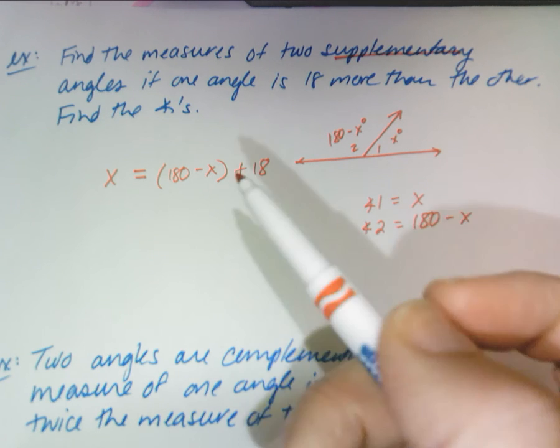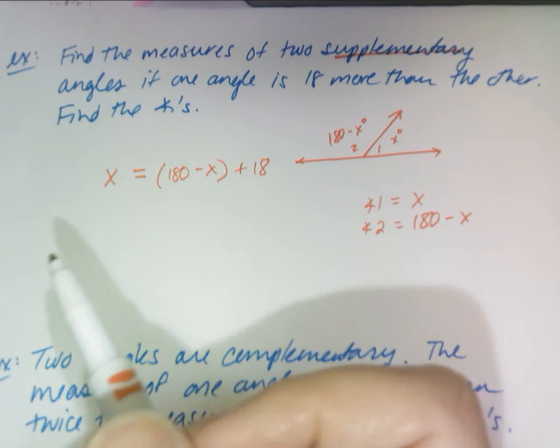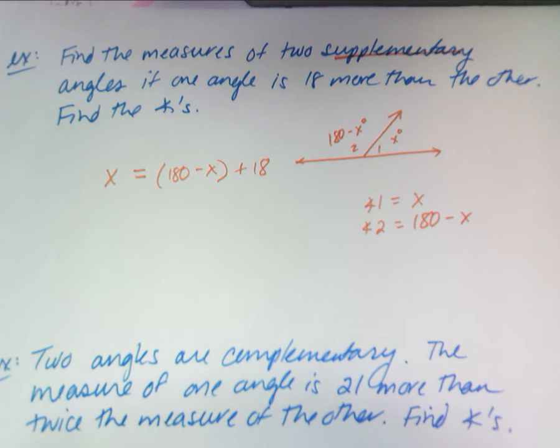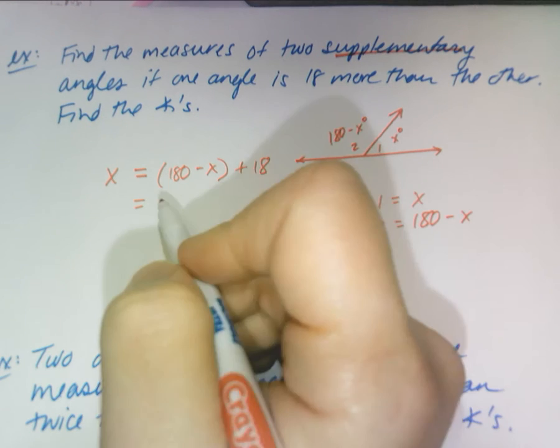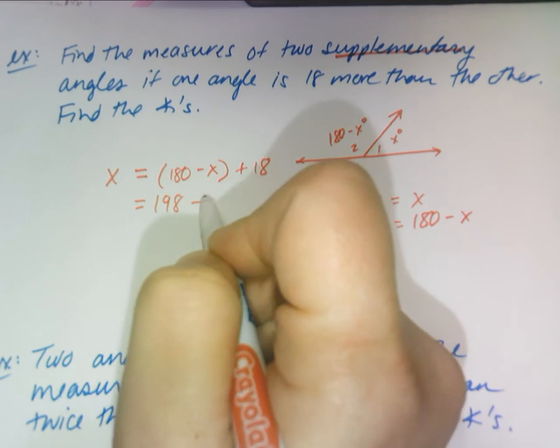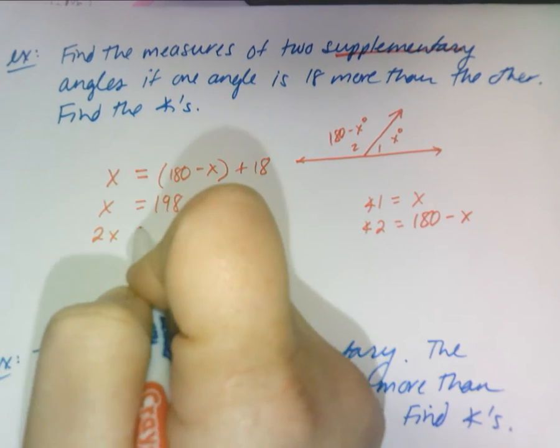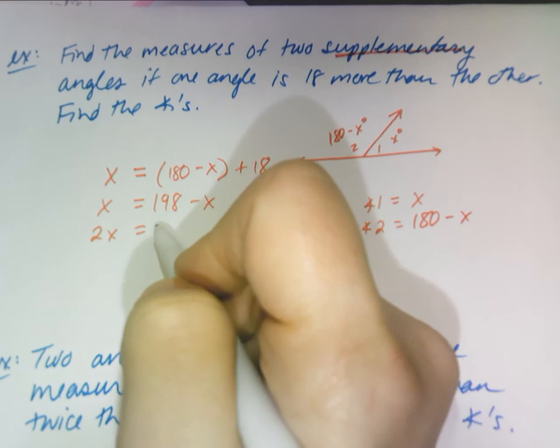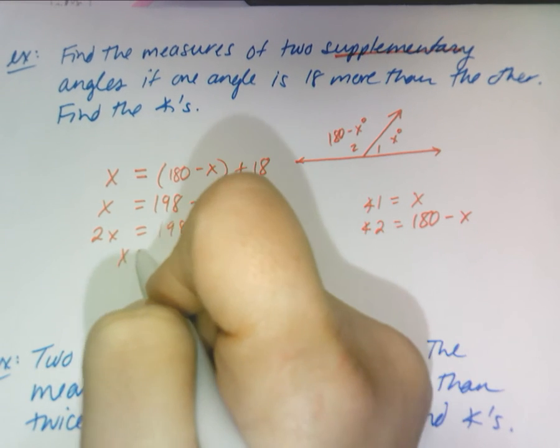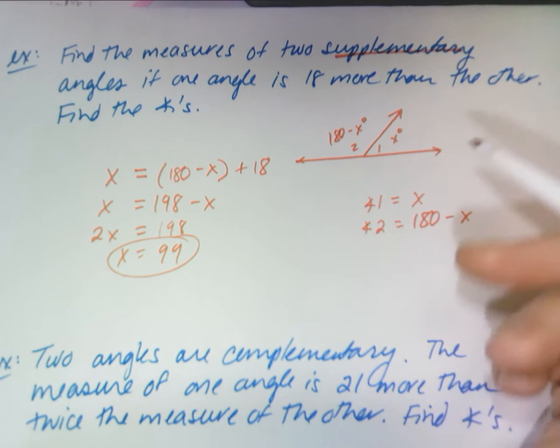And so now combine your like terms and make it a problem that you know from algebra. So 180 plus 18 would be 198. Add 2X over. So 198 divided by 2 is 99. So X is 99.